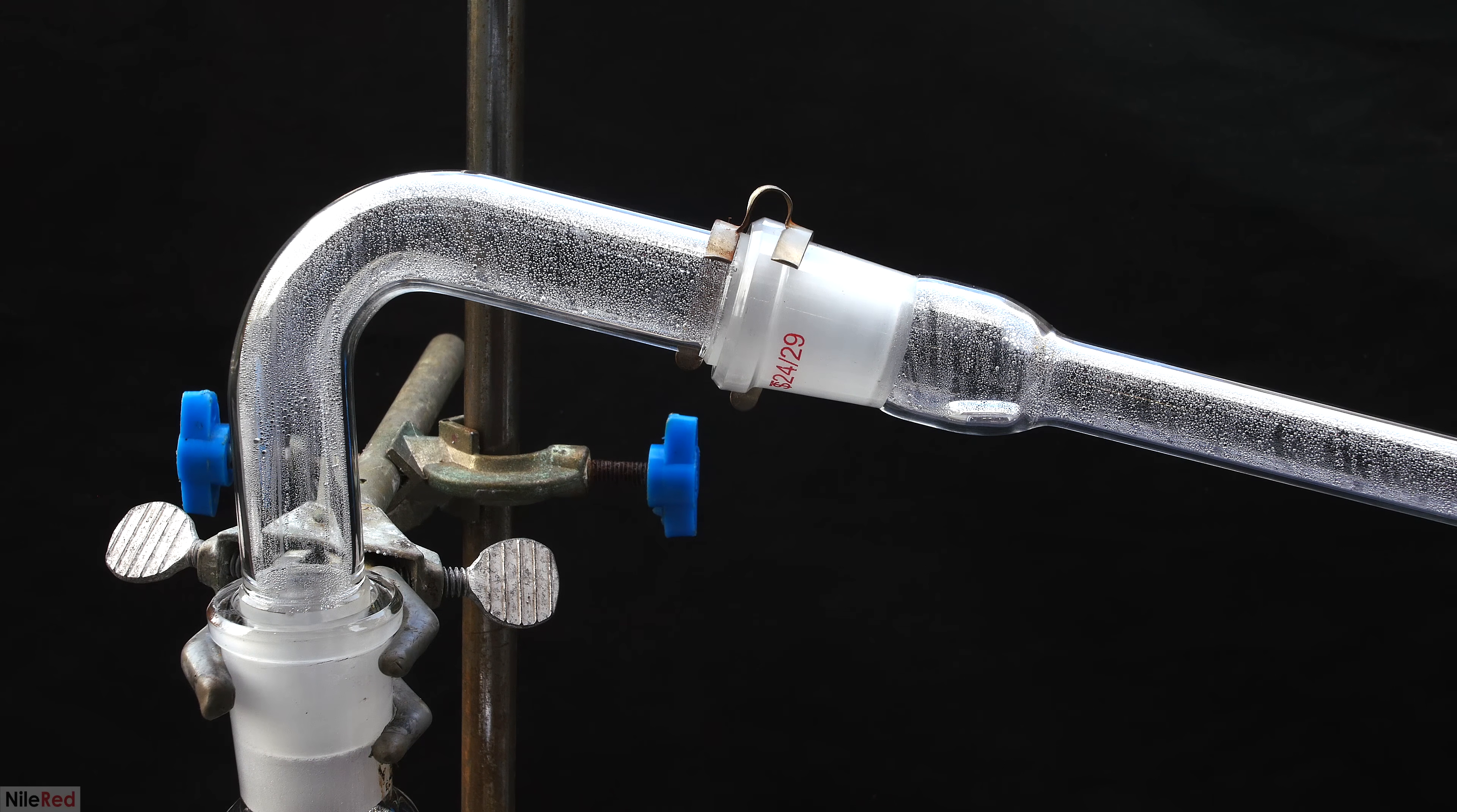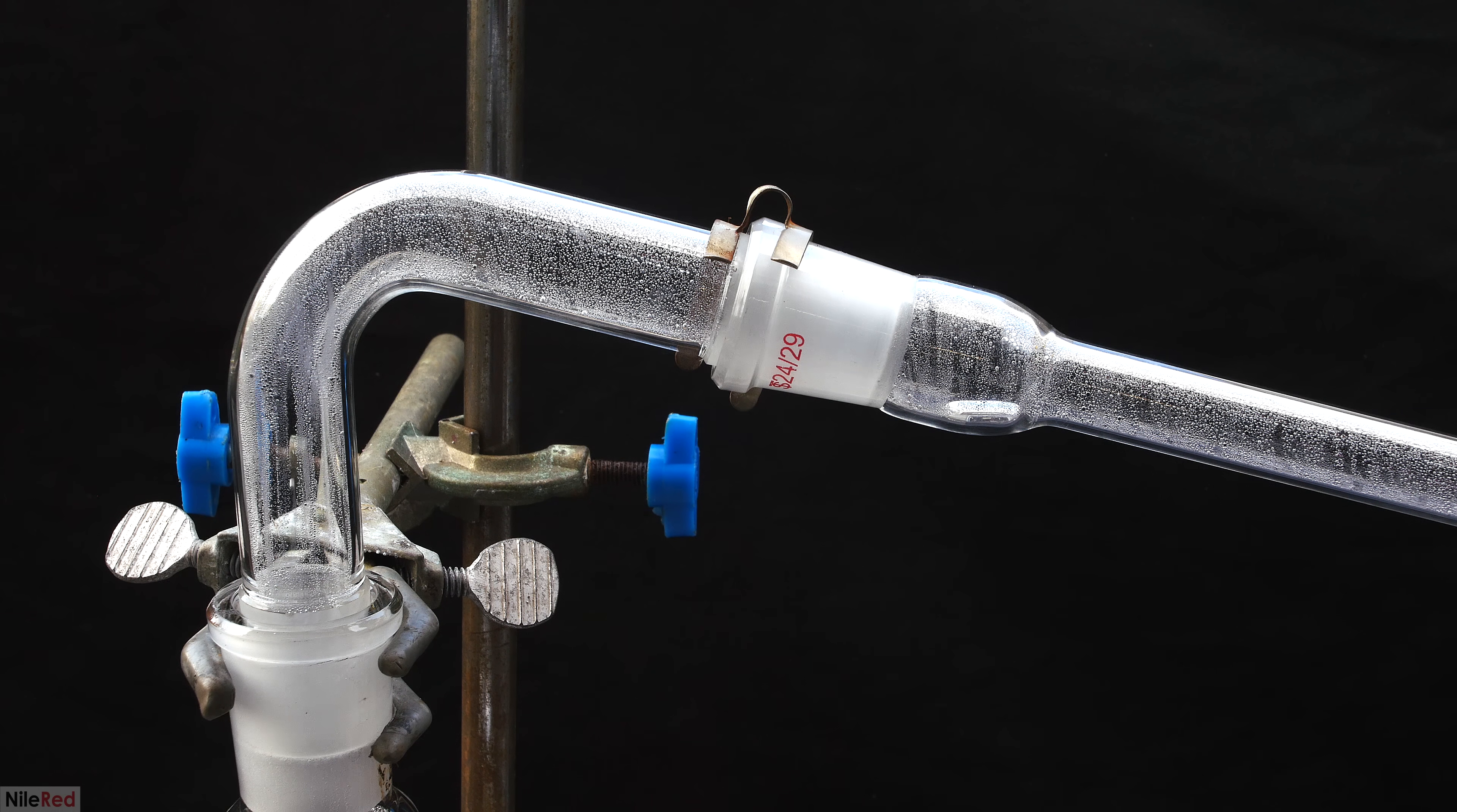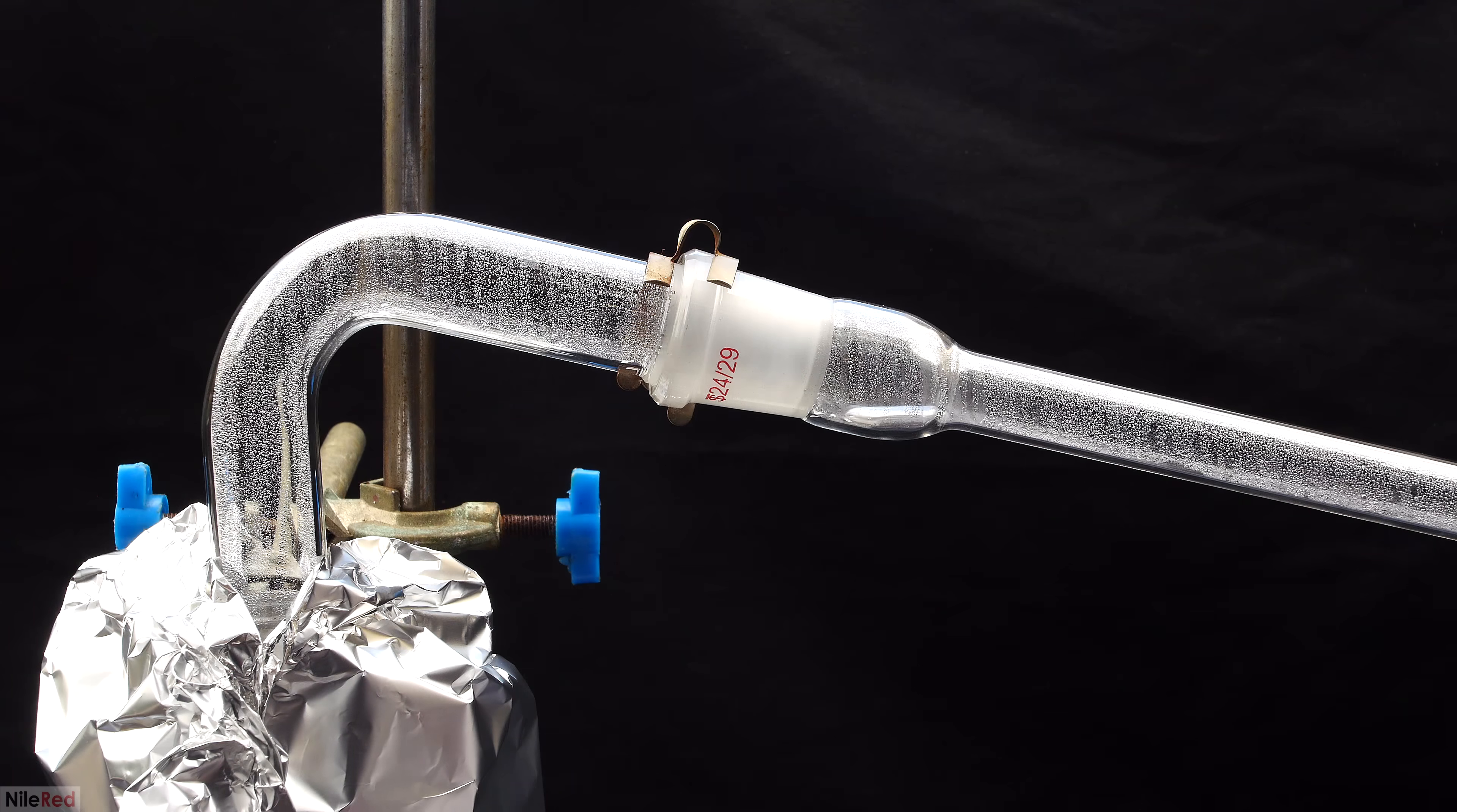With everything set up again, we can actually start the real distillation, and this time guys, I promise things work out. As the mercury vapor travels up the adapter, you can see it condensing on the walls of it. What's interesting here is that the mercury vapor is completely invisible, and we don't have something like a grey or silver cloud that you might expect with metal vapor. Also, the surface tension of mercury is really high, so it beads up immediately after condensing on the glass. Anyway, it doesn't take long for us to get a steady distillation of mercury going.